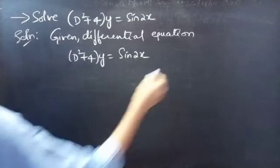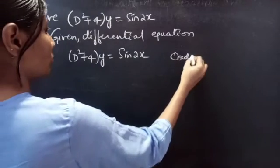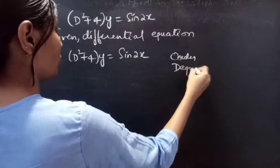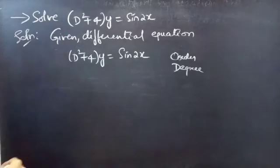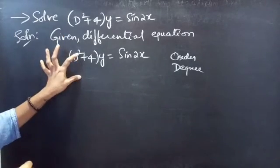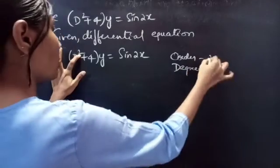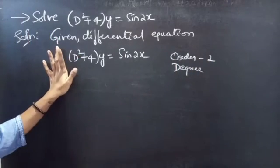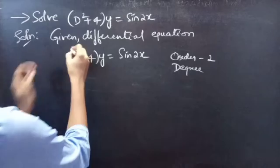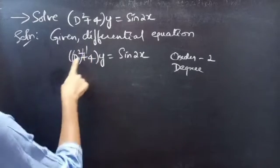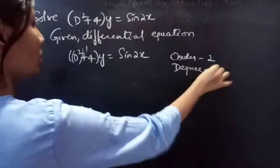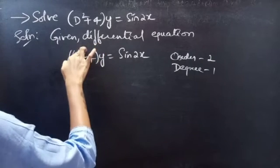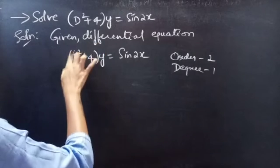Now let's find the order and degree of the given differential equation. Identify the highest derivative — here D² is the highest derivative, so 2 will be our order. Since the order is 2, we will get 2 constants in this problem. And the highest power of the highest derivative is 1, so 1 will be the degree.